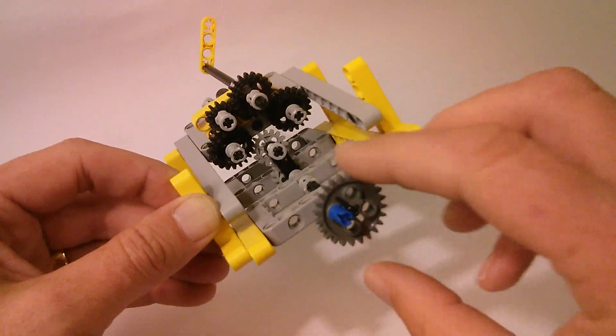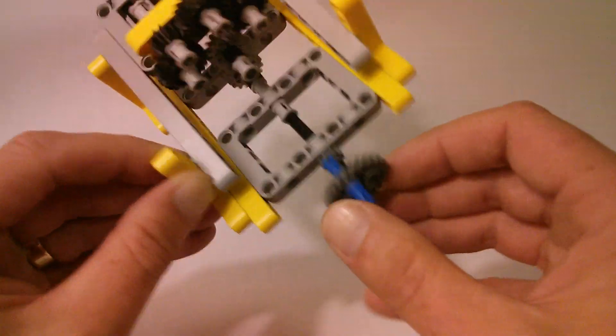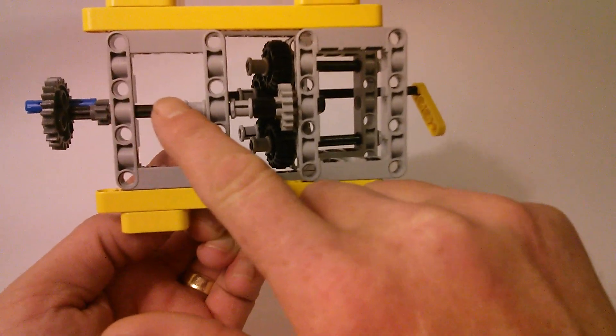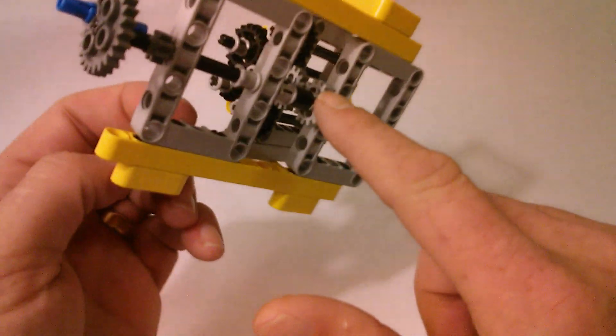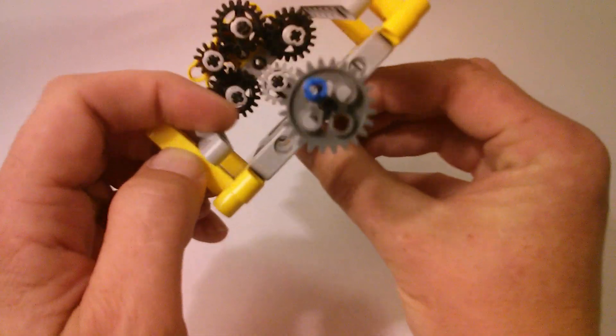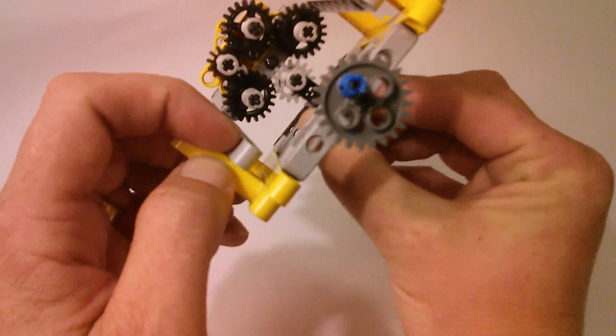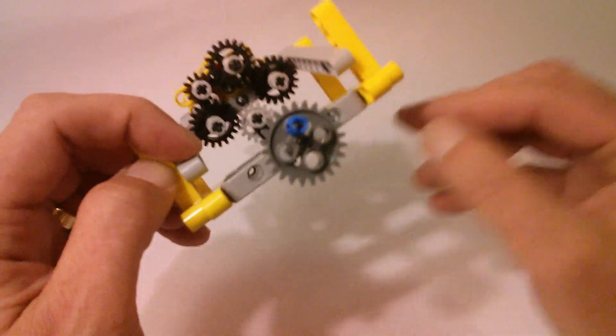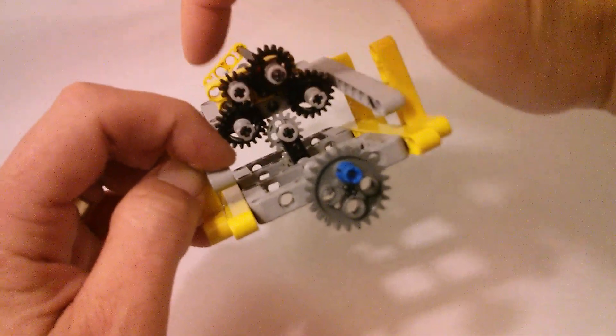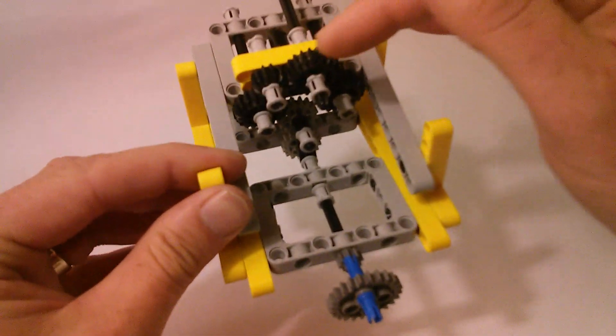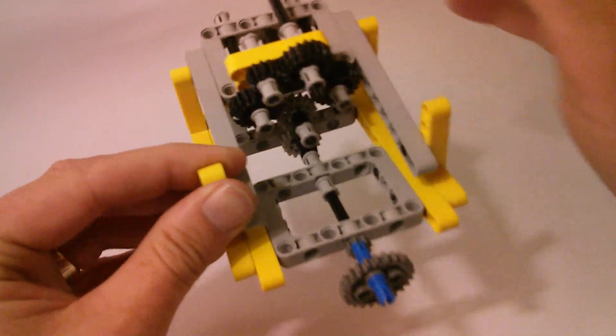How this works is, obviously this is the input, drives the drive shaft, which comes down, drives this cog here. Now this little piece here moves backwards and forwards with a little bit of friction, and it will drive either this cog or this cog. All these four cogs are all linked together, ultimately driving the output shaft.